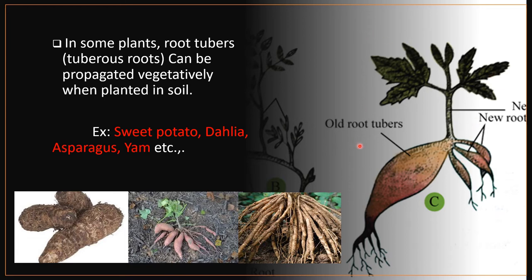In this picture the vegetative propagation is very clear. This part is the old root tuber, and these three are new root tubers developed from the tuberous roots.